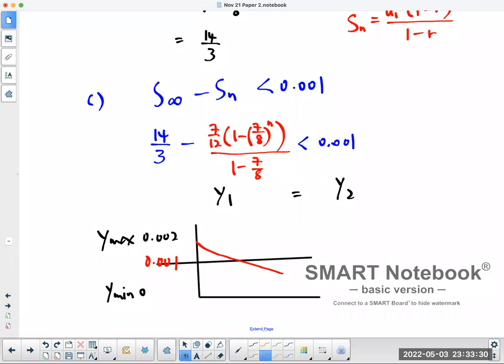So where they meet is what you want to find. Find point of intersection, the second, trace, 5, enter, enter, enter. And if you do this correctly, the point of intersection should be at 63.2675.